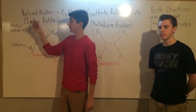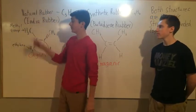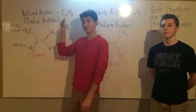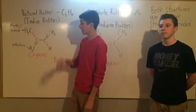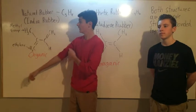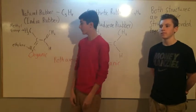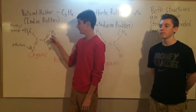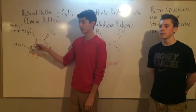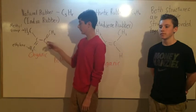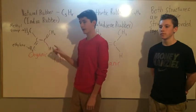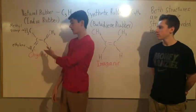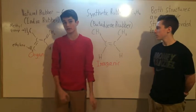Natural rubber, also known as India rubber, has a chemical formula of C5H8 — carbon and hydrogen. The chemical structure includes a methyl group, two ethylenes which are double bonded to carbons in the middle, and a single bond hydrogen. This is an organic compound because it is carbon-based and is found in nature.